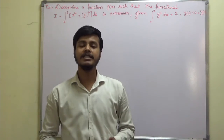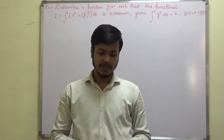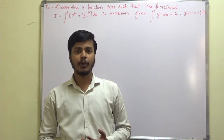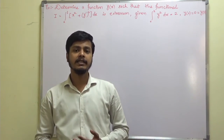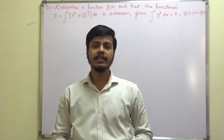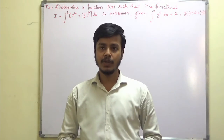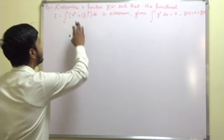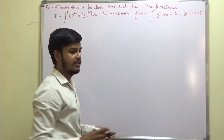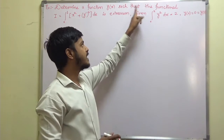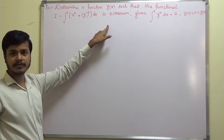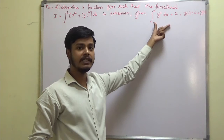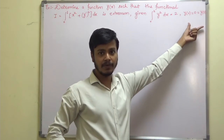Hello and welcome to this learning video. As you know, we were discussing about the isoperimetric problem. In this learning video, we are going to take a problem on it. This problem says: determine a function y of x such that the functional is extrema with isoperimetric constraint and the boundary conditions.